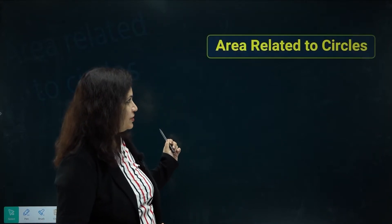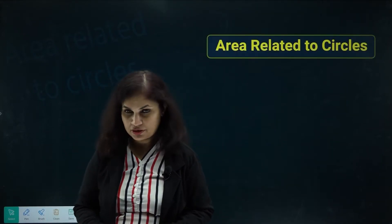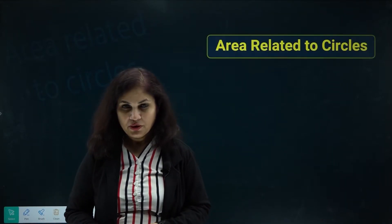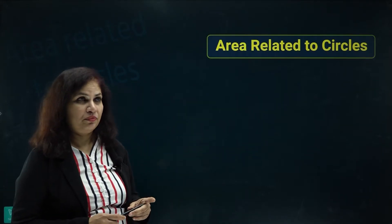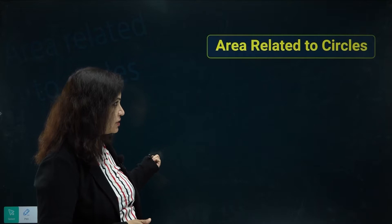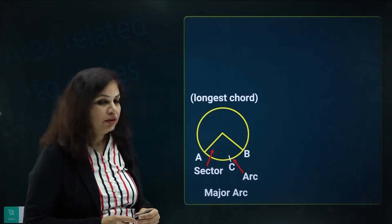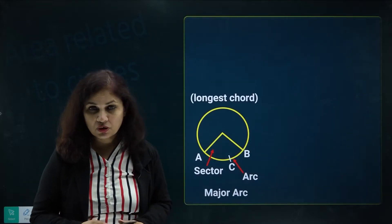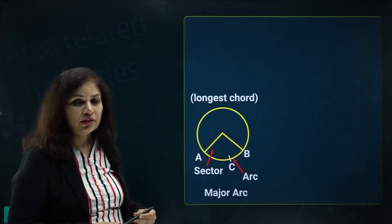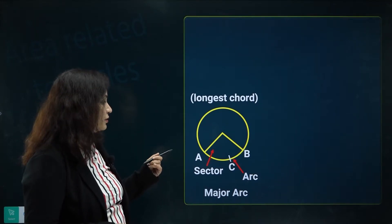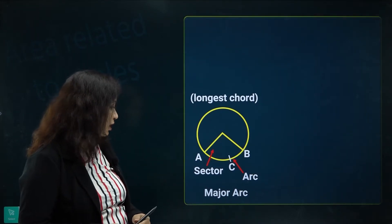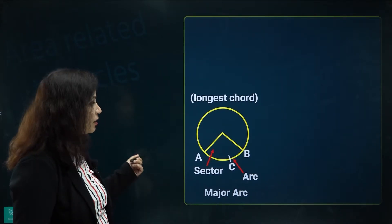Hello everyone, welcome back. Today we are going to start with Chapter 8 of NCERT, that is Areas Related to Circles. All of us know what circles are and we have been learning the parts of the circle. We know about the chords of the circle, and I'll be telling you about sector, arc, major arc, and minor arc.